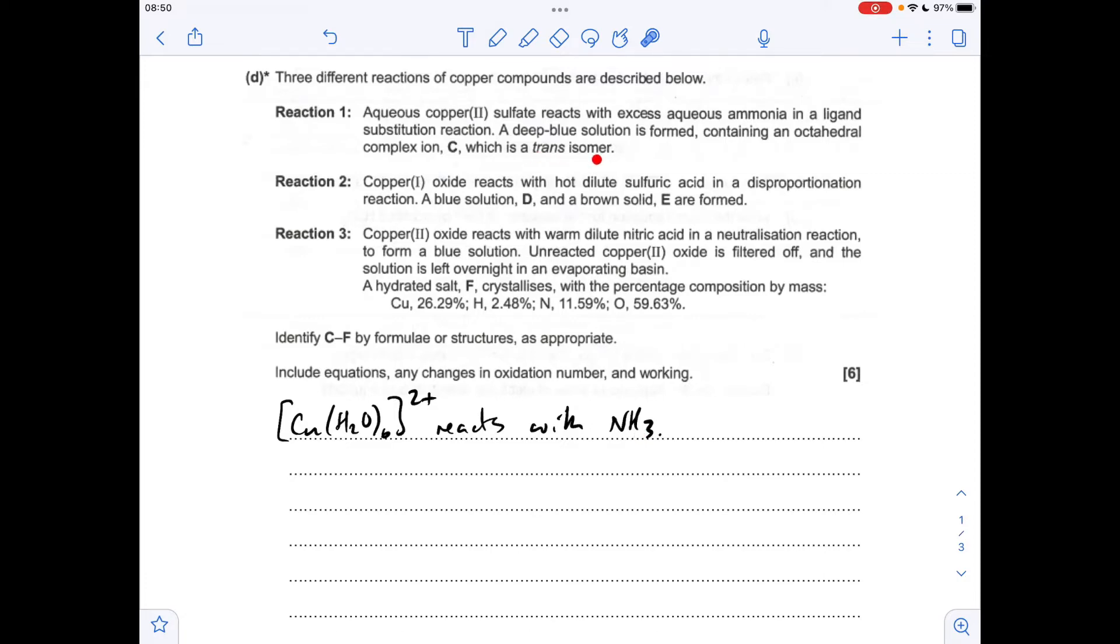Which means it's going to look like this with the water ligands 180 degrees apart. Just make sure you get your connectivity right - in terms of the water, it's the O that's bonded to the copper 2+ in the middle, and in terms of the ammonia it's the N that bonds to the copper 2+. We'll just finish off this with the reaction.